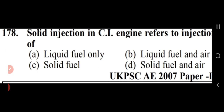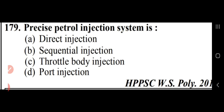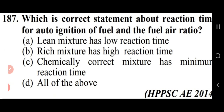Solid injection in a CI engine refers to injection of liquid fuel only — option A. The precise petrol injection system is throttle body injection — option C. The injector or atomizer breaks up the fuel and sprays it into the cylinder as very fine divided particles.